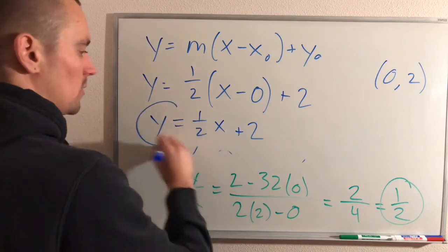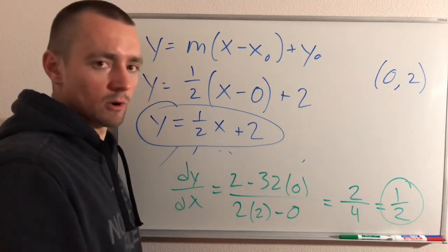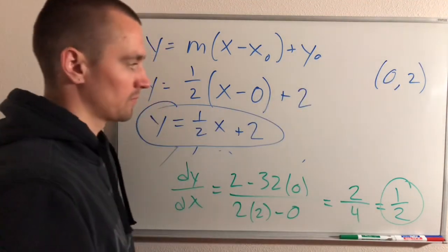And this will be the equation of the tangent line to that original curve that we were given that goes through this point. All right.